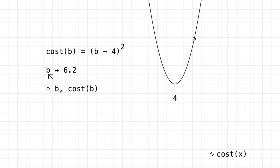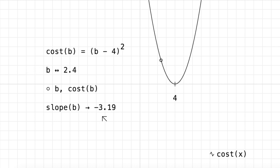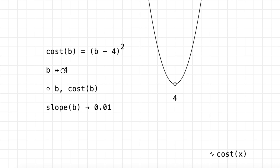How do we change b to minimize the cost and bring it closer to our target value of 4? It turns out that the slope of the cost function at b is exactly what we need. When b is too high, the slope is a positive number. And when b is too low, the slope is a negative number. So what we want to do is subtract a fraction of the slope from b, and no matter where b starts, that will push us directly towards the target. Because as b gets closer and closer to the target, the slope of the cost function approaches 0, so our updates become smaller and smaller until we end up right at our target.